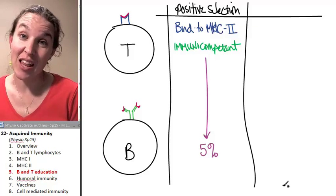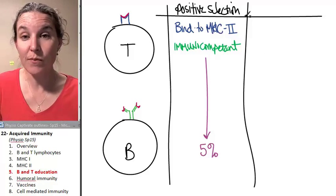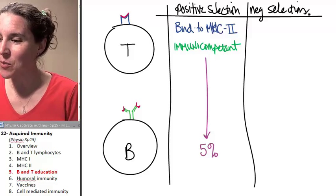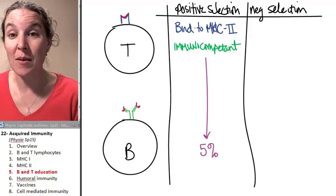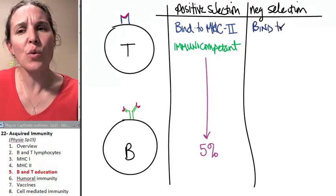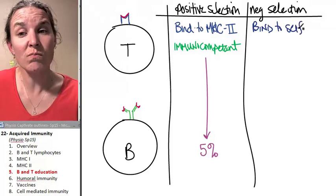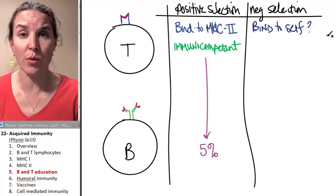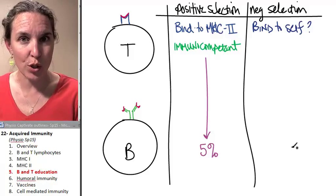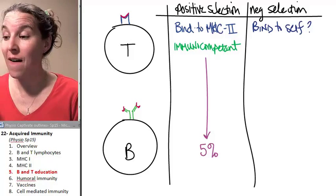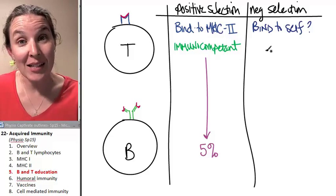How about thinking about the other class that they have to take? The other class was negative selection. Now, think about how one requires them to check. Do they bind to self? Do you bind to your own self molecules? Do you think you're going to pass the class if you do? Dude, no.